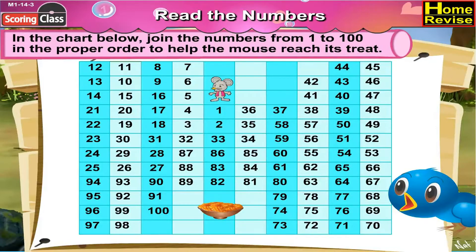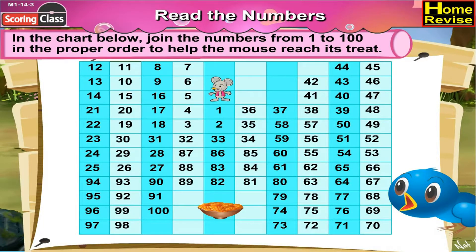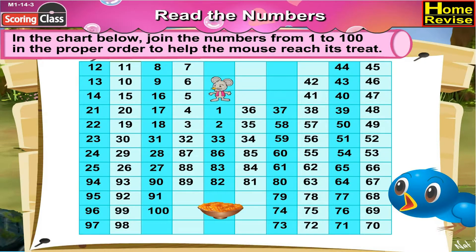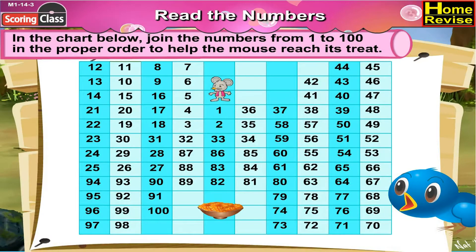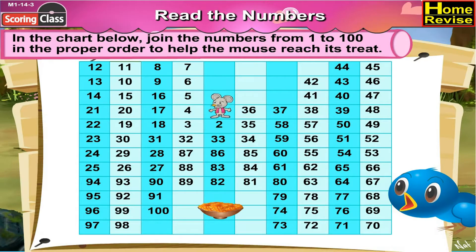In the chart below, join the numbers from 1 to 100 in the proper order to help the mouse reach its street. Let's do it then. Now here is the mouse. He'll go down to 1, then 2.